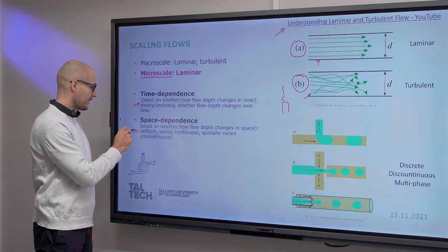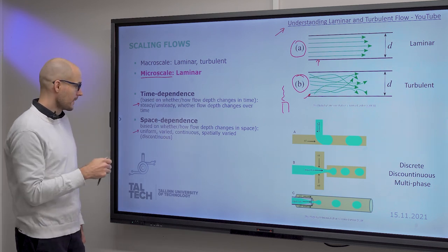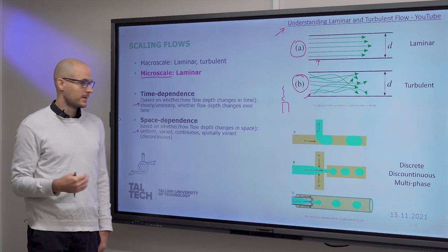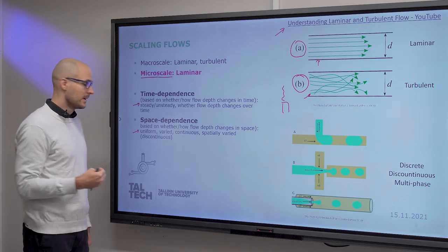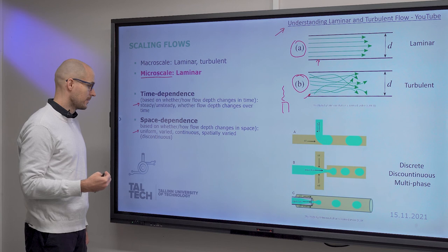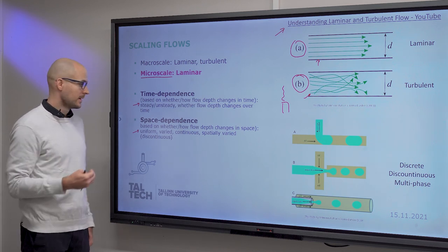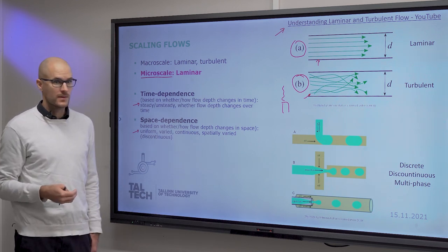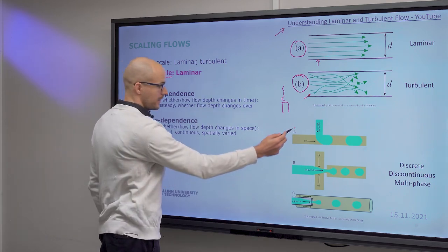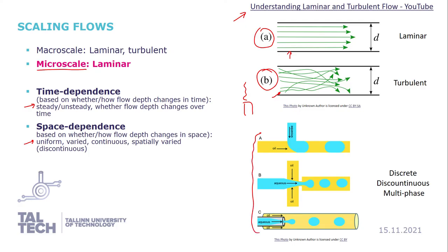Space dependence means that it is about how the flow depth changes in space. So based on this, we can have uniform, varied, continuous, and spatially varied flows. This here is part of today's lecture.